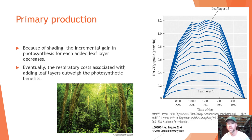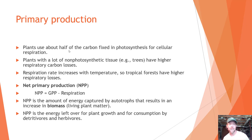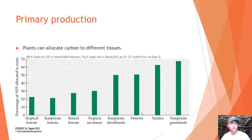Plants use about half of the carbon dioxide fixed in photosynthesis for cellular respiration. Plants with a lot of non-photosynthetic tissue — for example trees with big trunks — have higher respiratory carbon losses, and respiration rates increase with temperature, so tropical forests have high respiratory losses. Net primary production, or NPP, equals gross primary production minus the rate of respiration. NPP is the energy captured by autotrophs that results in an increase in biomass — it's the energy left over for plant growth and consumption by detritivores and herbivores.